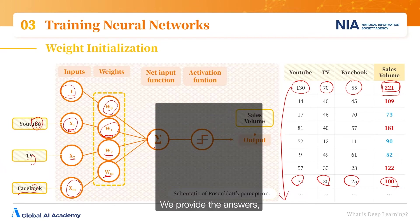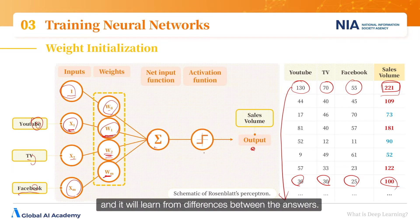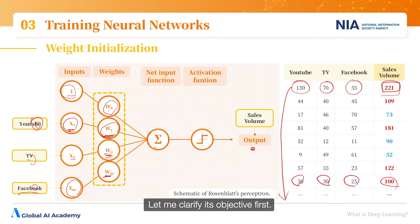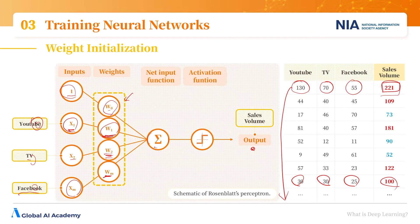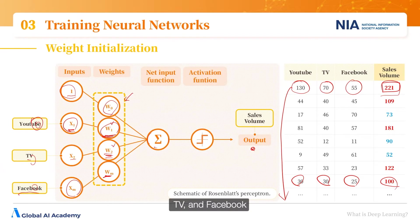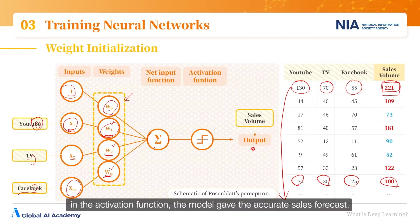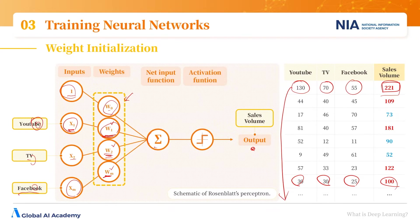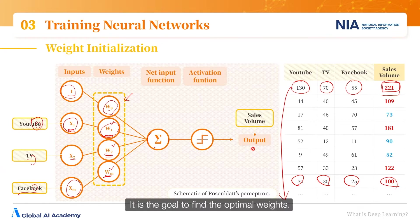This is where we provide the correct answers and the model learns from the differences. The objective is to find the optimal weights — with what weights for YouTube, TV, and Facebook in the activation function does the model give an accurate sales forecast? The goal is to find the optimal weights.